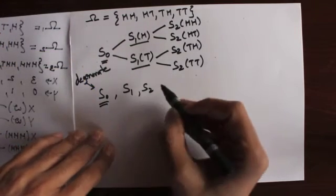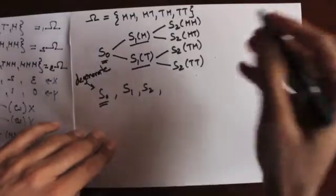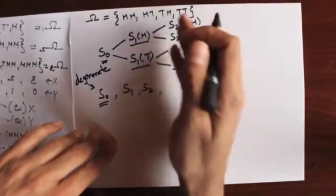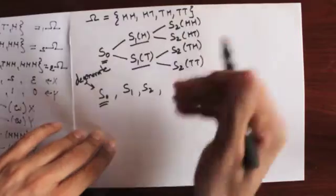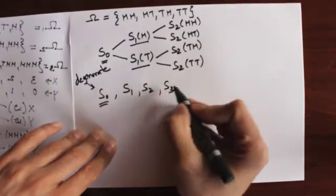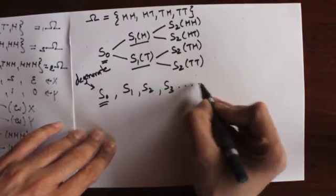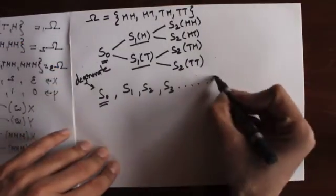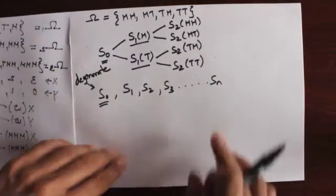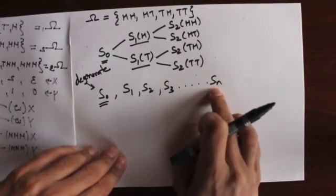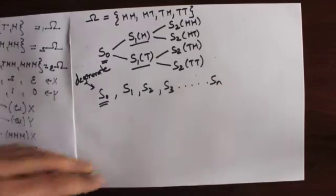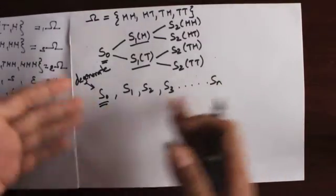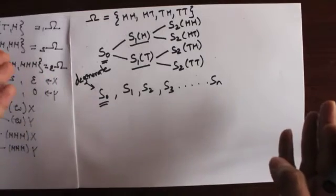We could continue the experiment by tossing another coin and defining the stock value at time three as s3, which would also be a random variable. More generally, we can toss the coin n times and the value of the stock at time n, sn, would be a random variable that depends on the first n coin tosses.